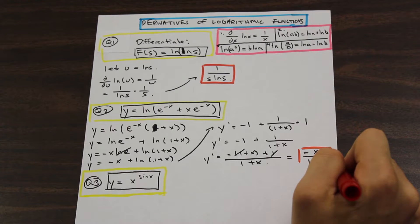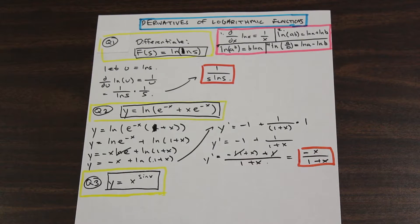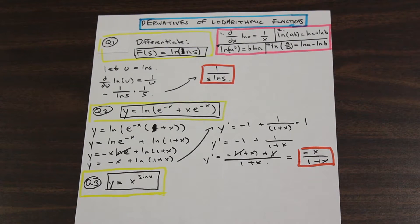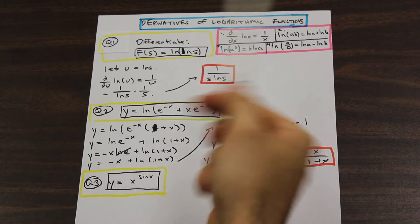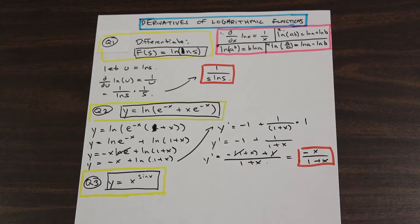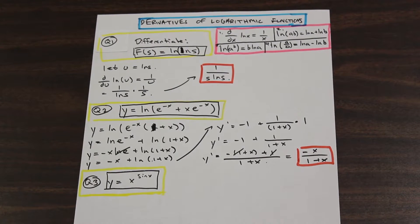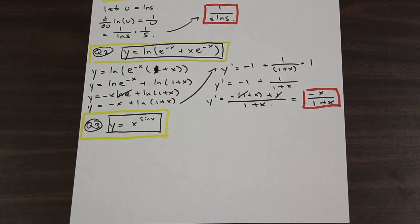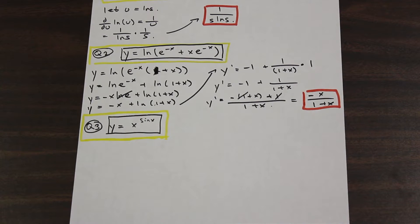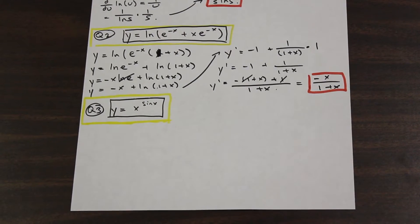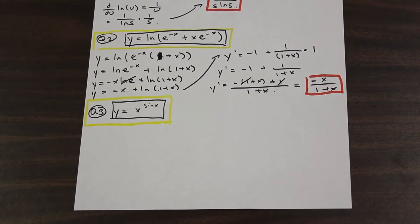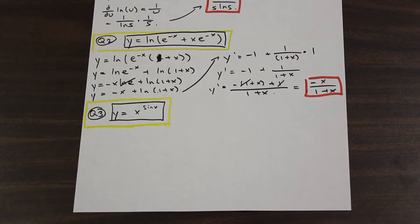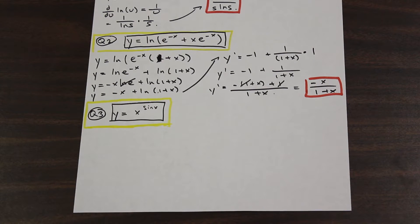So a little bit trickier, right? But showcasing some of the rules that we want to get across here, which are the ln rules that we included up in the top. So with that being said, let's move on to the final question here. This one is a little bit trickier, and it's y equals x to the power of sin(x). Now this doesn't look like a log function. However, we can make it a lot easier for us to solve if we use the power of the log rules in order to solve the question, because otherwise it would be tricky.